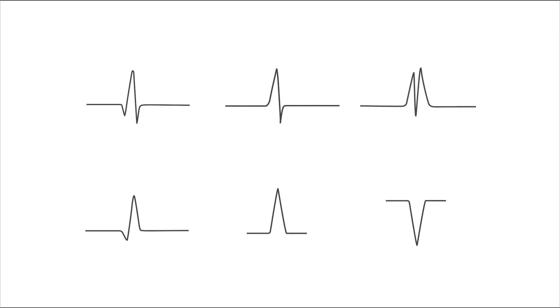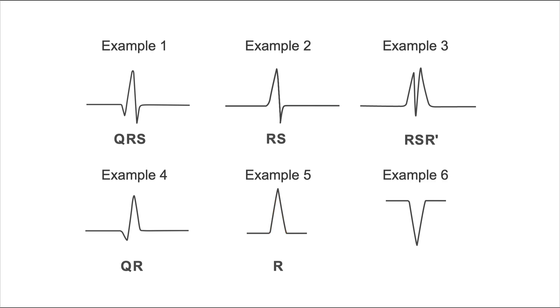Here are the different examples again. Take a closer look at them. In example number one, we had a Q-wave, an R-wave, and an S-wave. In example number two, we had an R-wave and an S-wave. In example number three, we had RSR-prime. Example four shows a Q-wave and an R-wave. Example number five shows just one big upward deflection, which has to be an R-wave. Example number six shows just one big downward deflection, which has to be a QS-pattern.